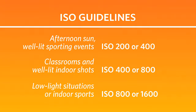When shooting in situations with lots of light, such as afternoon sun or well-lit sporting events, an ISO of 200 or 400 is appropriate. When shooting inside a classroom or well-lit indoor environments, a 400 or 800 ISO will probably work. When shooting in low-light situations or indoor sports, you may want an ISO as high as 800 or 1600 on your camera.